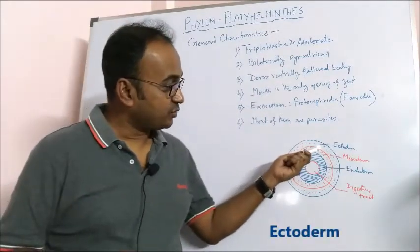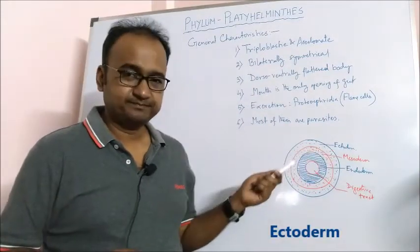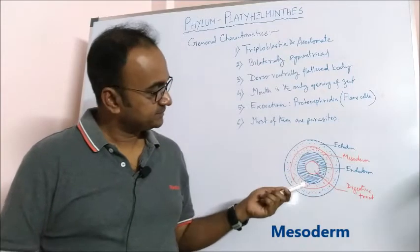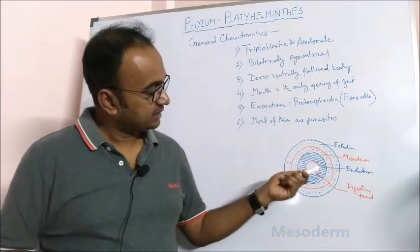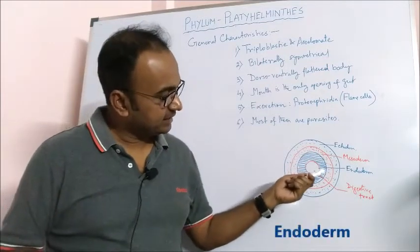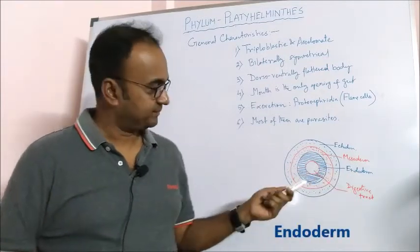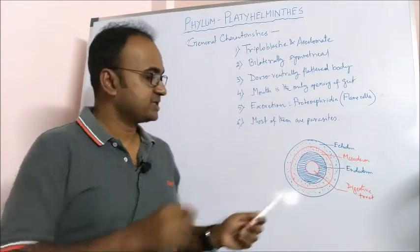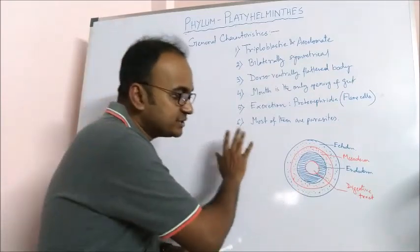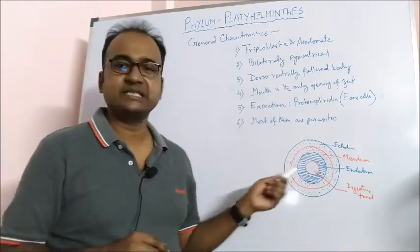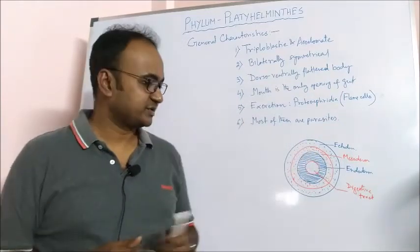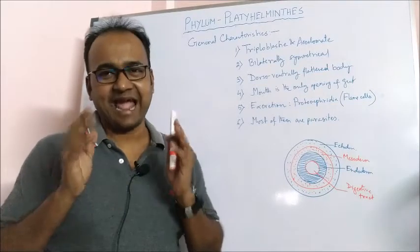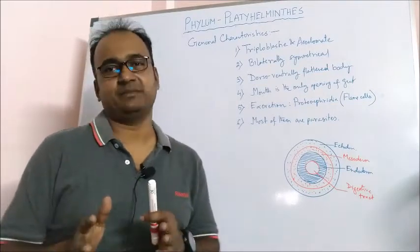In the cross section, we can see the outer ectoderm, the middle layer mesoderm, and the inner layer endoderm, along with the digestive tract. There is no body cavity in this picture, so this is the cross section of an acoelomate animal.